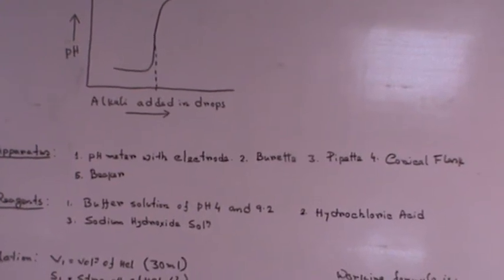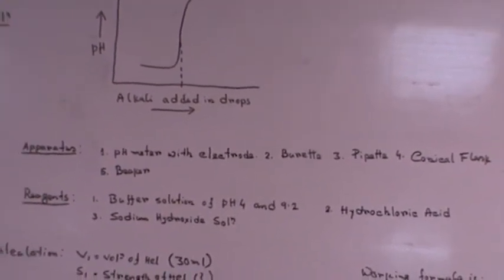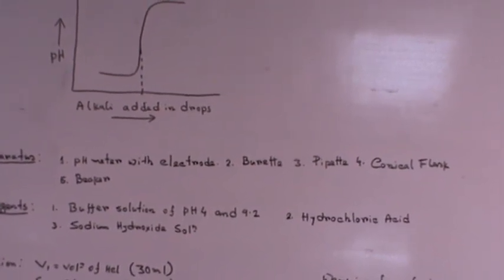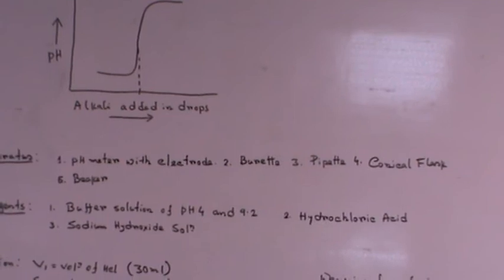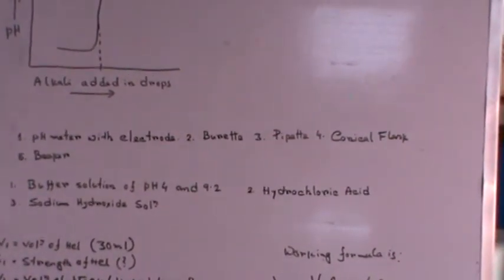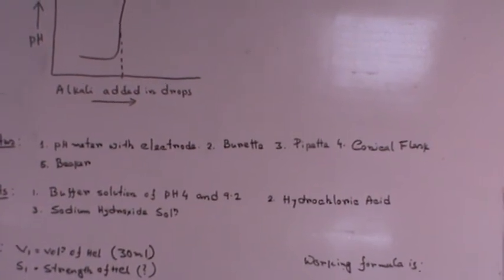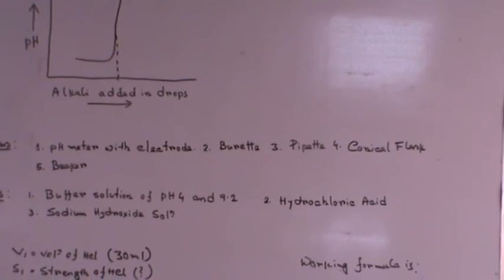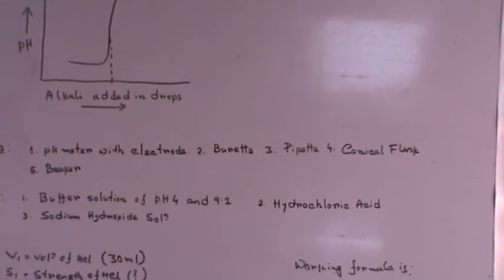And the reagents should be buffer solution of pH 4 and 9.2 for the calibration of the electrode and the pH meter, and we need hydrochloric acid and sodium hydroxide.